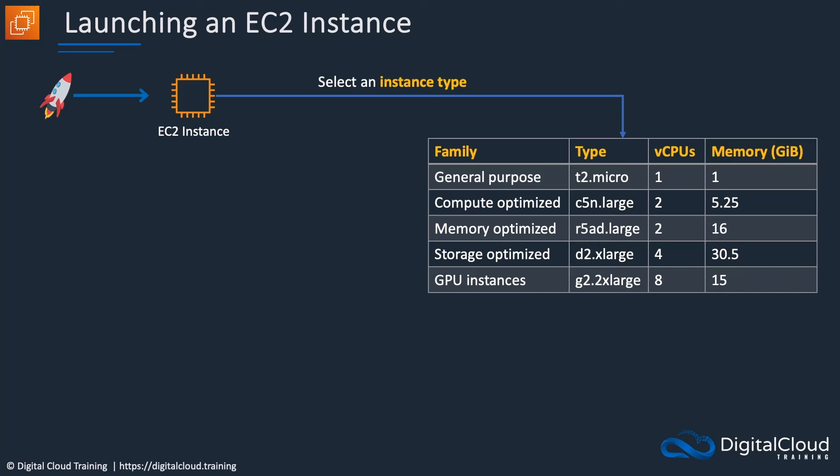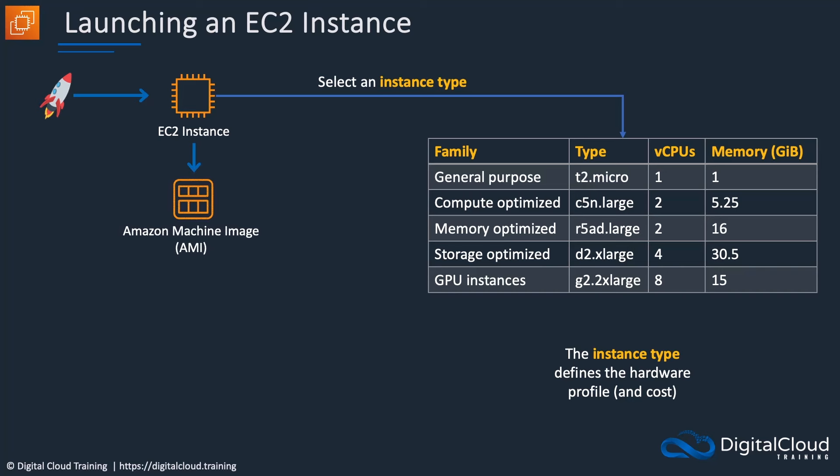For most of the lessons in this course, we're going to use the T2.micro. This is a general purpose EC2 instance type and it's within the free tier. The instance type defines the hardware profile and therefore the cost. We also need to select an Amazon Machine Image. The AMIs define which operating system we want to use and how it's configured — it might have, for example, an application pre-installed on it.